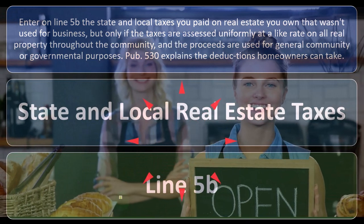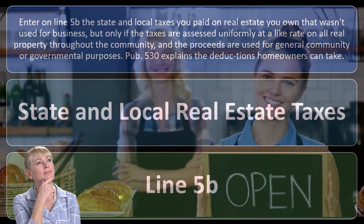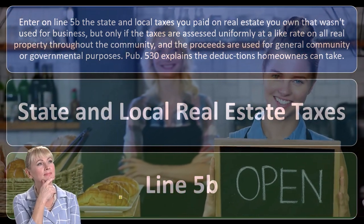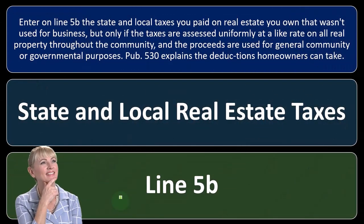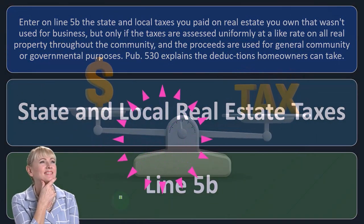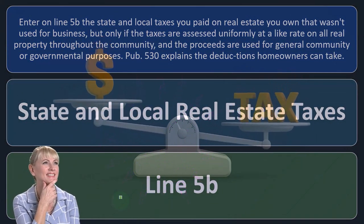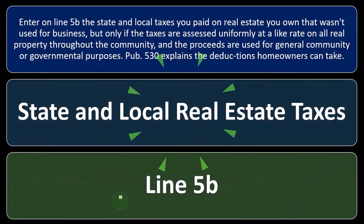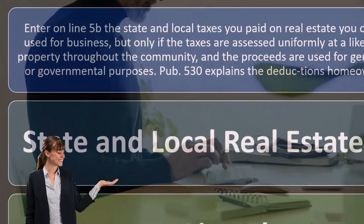If you use part of your home for business — a home office or something like that — then maybe you have to have a ratio of your taxes, which we might talk about when we get to the Schedule C. But you can't double dip. You can't deduct both on the Schedule C and on Schedule A for the home office deduction or whatever.